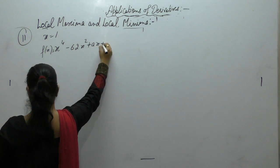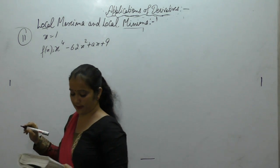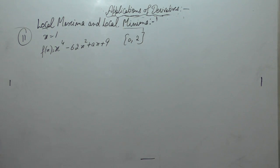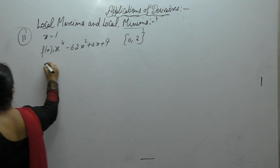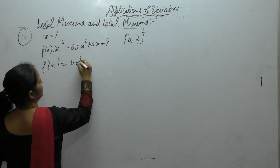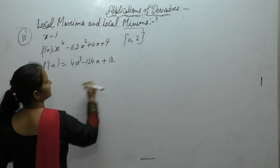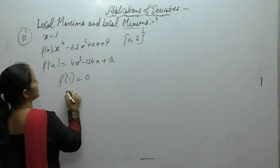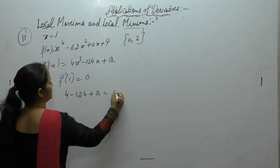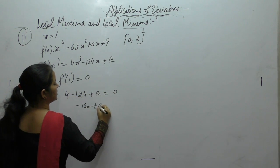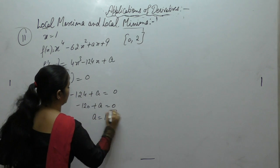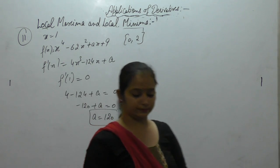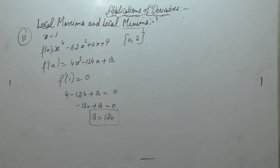Next one. Attains its maximum value on the interval 0 to 2. Find the value of a. First find f dash x: 4x cube. Now it is given at 1, it has maximum value. So 4 into 1 minus 1 by 24. So we get the value of a as 120.